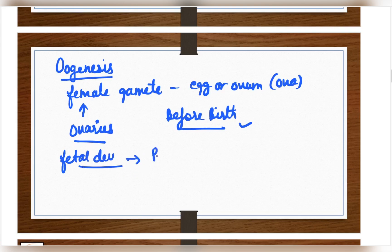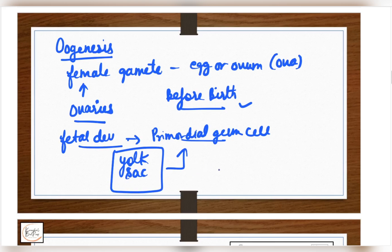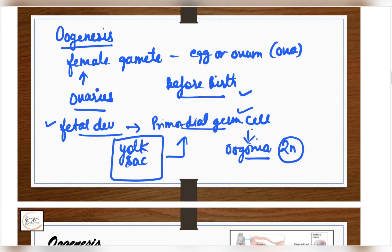During fetal development, there are primordial germ cells that migrate from the yolk sac to the ovaries. These primordial germ cells move there and differentiate within the ovaries to form oogonia — singular is oogonium. Oogonia are diploid in nature. So we have primordial germ cells during fetal development migrating from the yolk sac into the ovary, where they differentiate into oogonia, the primary cells.